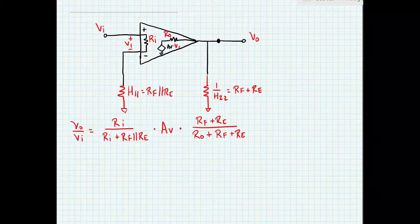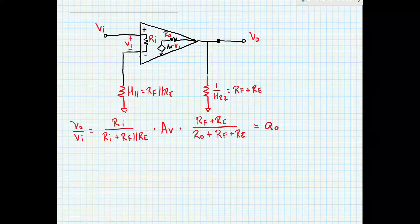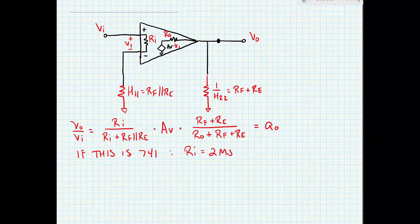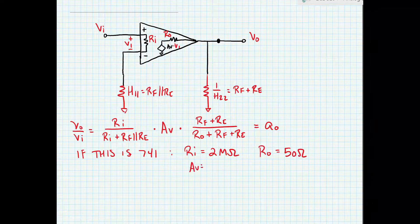Since we have a voltage at the input and a voltage at the output, this is our voltage gain — sometimes labeled little a-sub-zero. Now let's assume that this amplifier is a 741. In that case, the input resistance is equal to 2 megaohms (from the datasheet), the output resistance is equal to 50 ohms, and AV is equal to 200 kilovolts per volt.